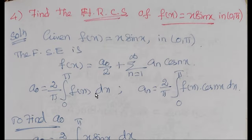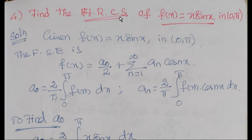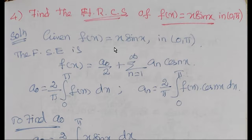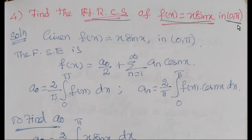Hi students, it is Faisal Hagar Guttay. Now we will solve a question on half range Fourier design series expansion. We will find the half range cosine series of f(x) = x·sin(x) in the range 0 to π.